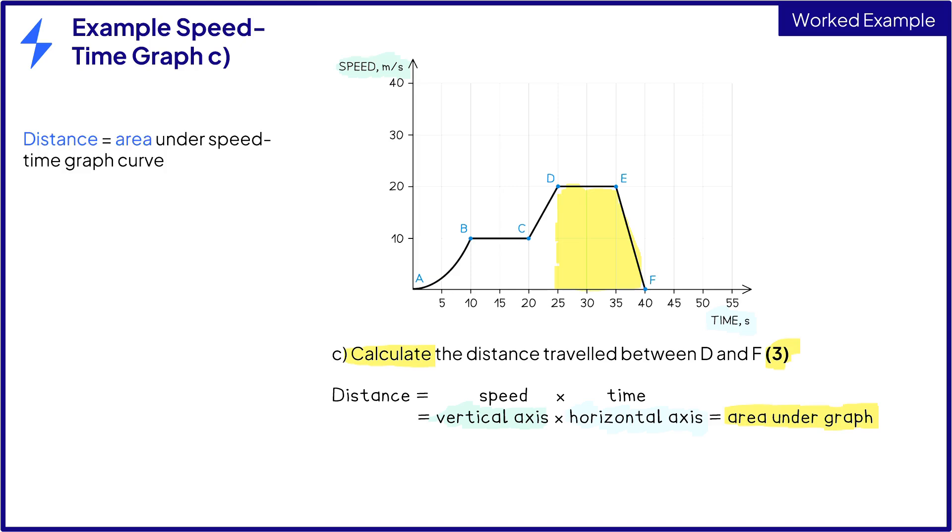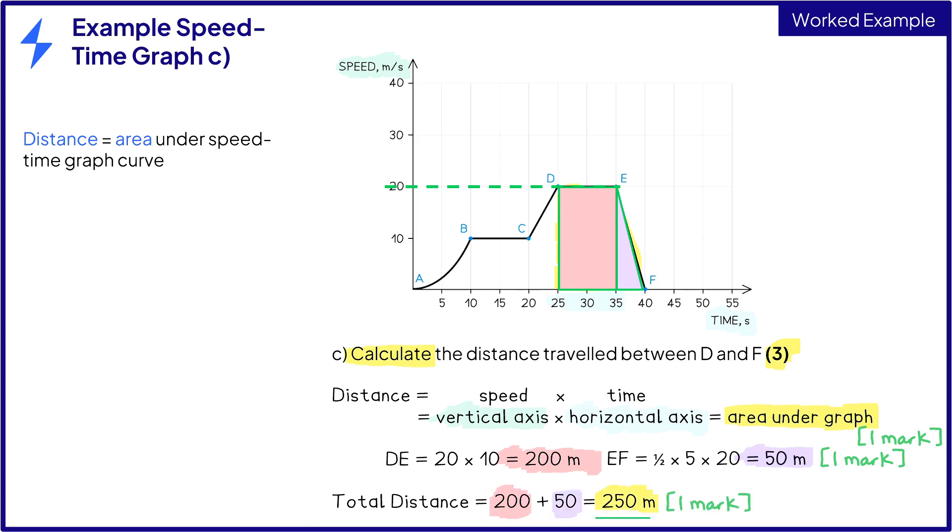For a speed or velocity-time graph, the area underneath is equal to the distance travelled. One mark. Here, this area is made up of a rectangle and a triangle. The area of the rectangle is 20, which is the height, times 10, which is the width, which is equal to 200 metres. The area of the triangle is a half times base of 5 times height of 20. This is equal to 50 metres for the second mark. Add the two areas together to obtain the total distance travelled between D and F. This is equal to 200 plus 50, which equals 250 metres for the final mark.